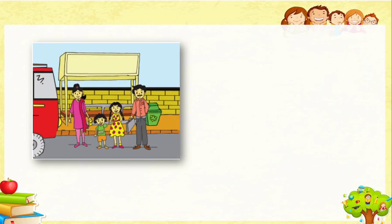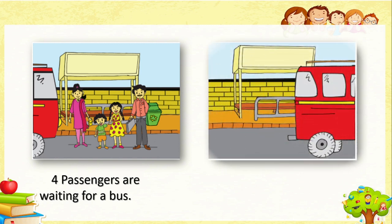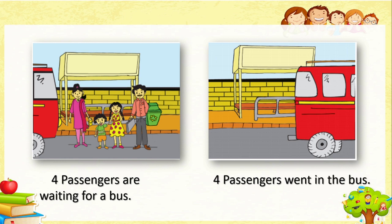Here you can see four people standing at the bus stop — Mummy, Daddy and two children. They are waiting for the bus. Four passengers are waiting for a bus. After some time, the bus arrives and all four people board the bus. Four passengers went in the bus.